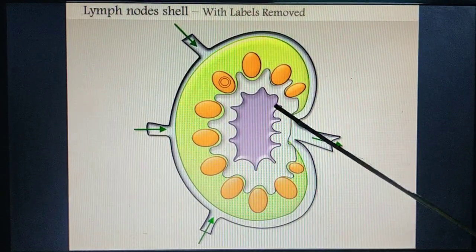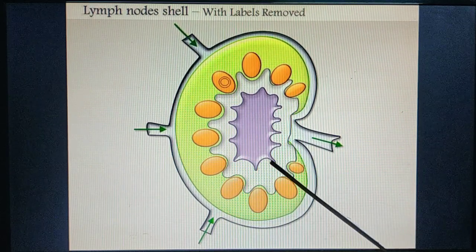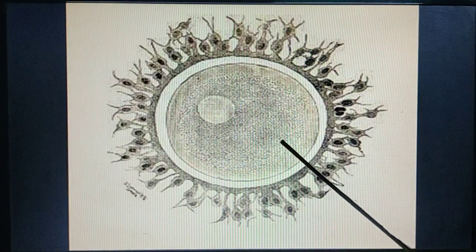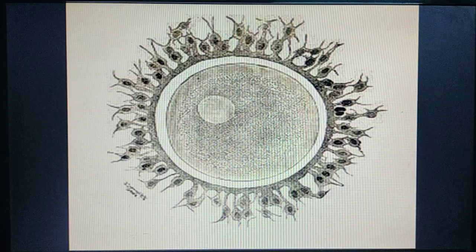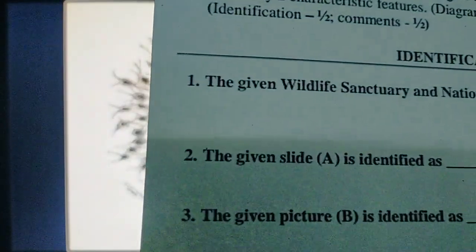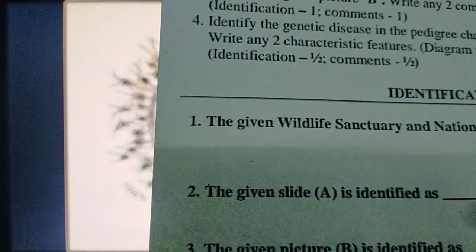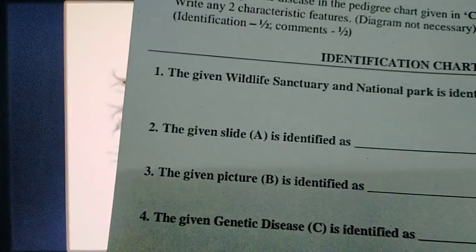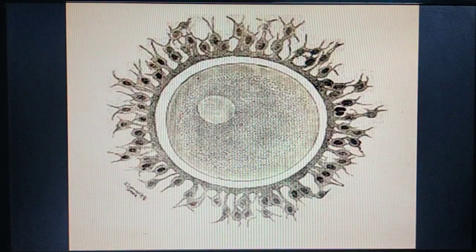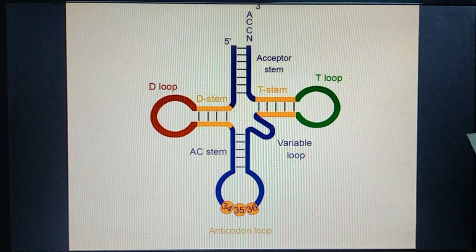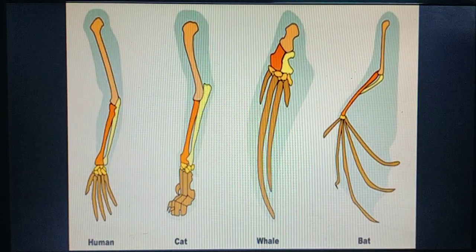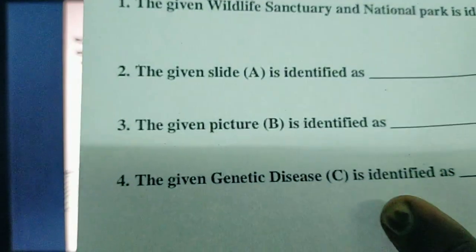If it is a lymph node picture, identify it as lymph node. Then there is human sperm and human ovum. In question two A, fill in the answer line with either human sperm, human ovum, Entamoeba histolytica, or lymph node.